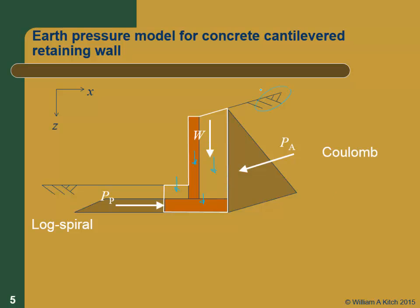When using Coulomb, the wall friction angle should be about two-thirds of phi-prime. On the passive side, there are many questions about what to do with passive pressures. If you're confident nobody will disturb anything in front of your wall, you should account for passive pressures, using the log spiral method for calculating Kp. If you want a conservative low number for Kp, you can use Rankine. But the real question is what conditions to assume for the passive earth pressures.